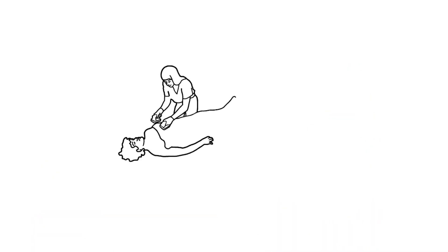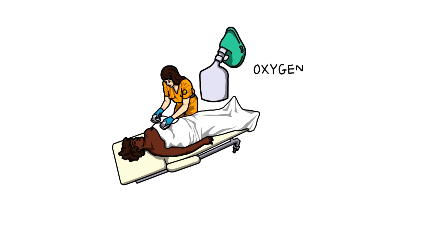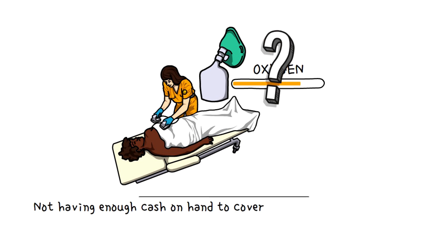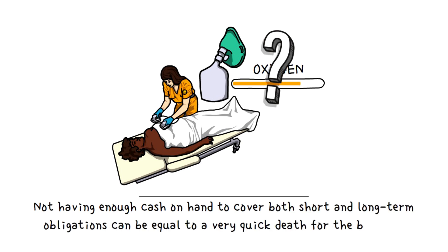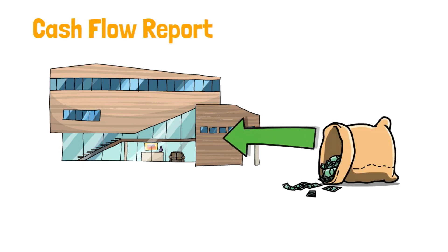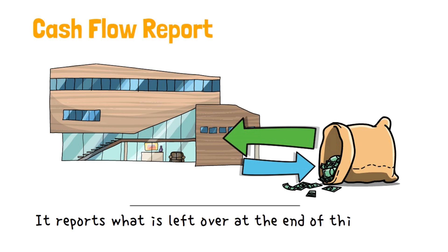Going back to the human health analogy, the cash flow report is similar to making sure your business has the oxygen needed to live. Most of business is transacted in cash or cash equivalents, and not having enough cash on hand to cover both short and long-term obligations can be equal to a very quick death for the business. So the cash flow report measures the amount of cash flowing into the business as well as the amount of cash flowing out of the business over a fixed period of time, and it reports what is left over at the end of this period.